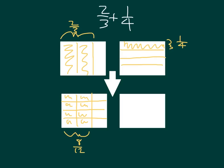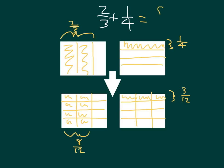If we do the same thing with 1 fourth — we had that divided horizontally for the fourths, and then we divide it into 3 parts by drawing those vertically. Looking at that same amount, that's 1, 2, and 3. So that 1 fourth equals 3 twelfths. At that point, we can go ahead and add those together. We have 2 thirds equaling 8 twelfths, and 1 fourth equaling 3 twelfths. And 8 twelfths plus 3 twelfths is 11 twelfths.